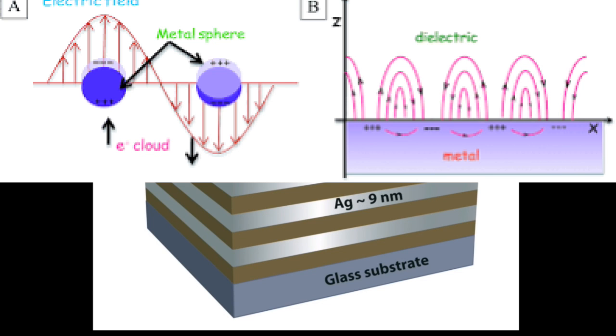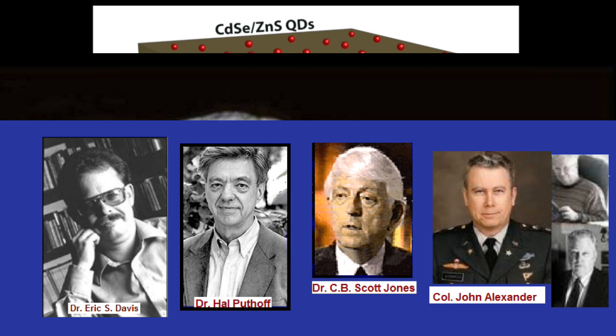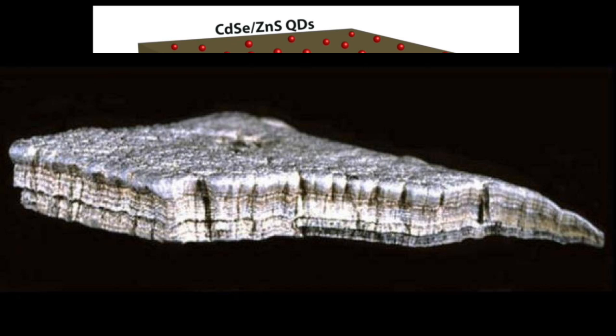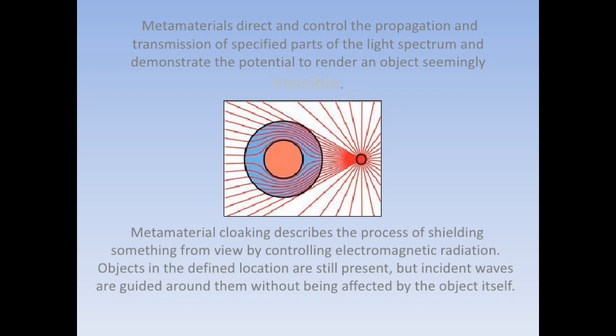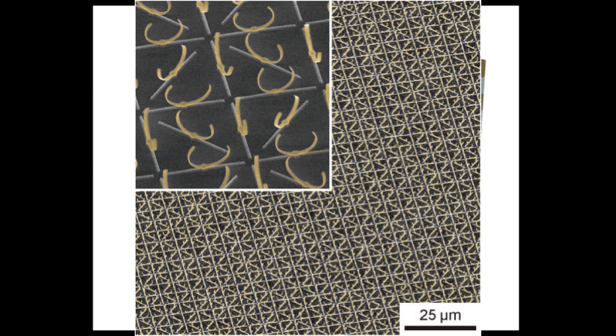But what Eric Davis and others at the To The Stars Academy are reporting in retrieved materials from these crashed tic tac or flying saucer type objects with electron microscopes, they're able to see a kind of metamaterial lattice structure at the billionth of a meter level and maybe even at the angstrom level, which is one-tenth of a nanometer or so.